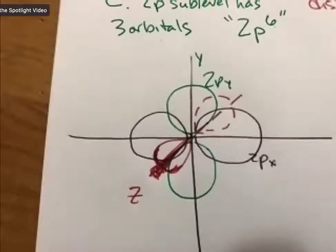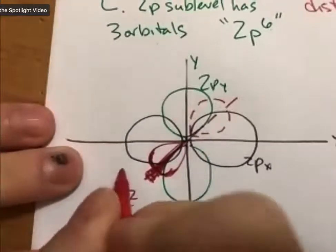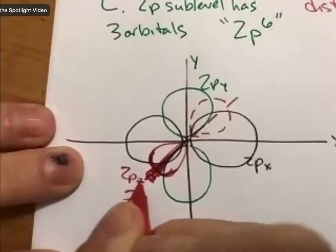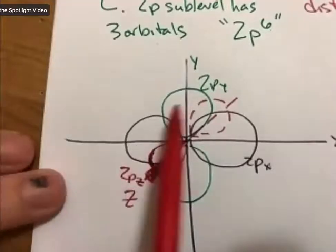Anyway, that's a little bit of how you do it, and I guess I should label this red one as 2pz. So I label all my axes. But now we know the shapes of s's and p's, p orbitals, and we know how to configure them around the nucleus.